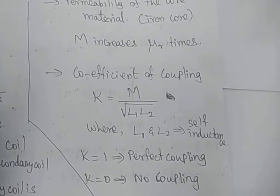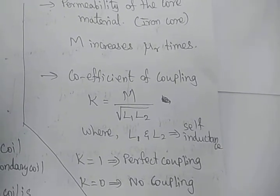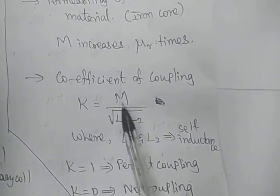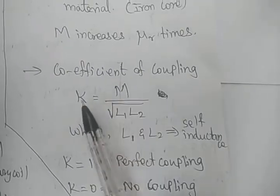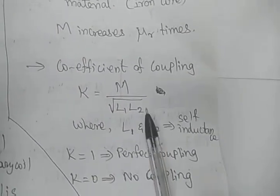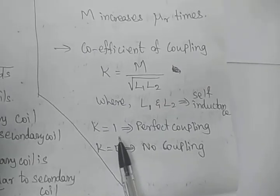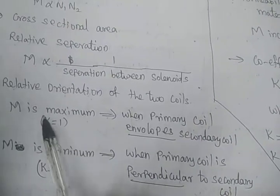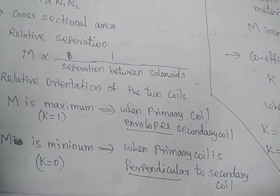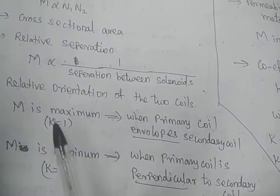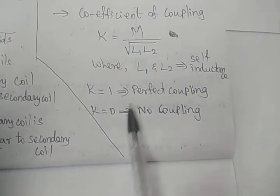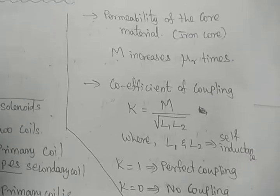The coefficient of coupling K is given by K = M / √(L1·L2), where L1 and L2 are the self inductances of the two coils and M is their mutual inductance. If K equals 1, that is perfect coupling, which occurs when the primary coil is wound over the secondary coil coaxially. If the angle between them is zero, coupling is maximum. If they are perpendicular, coupling is zero — there is no mutual inductance.